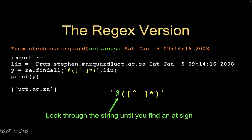We imported RE, and the variable holding the line of text is now called 'line.' We do re.findall() and say we want to begin matching after the at sign, then match anything that's not a space — using '[^ ]*' — and stop. So we don't start until after the at sign and we stop when we hit a space. The result is 'uct.ac.za' — the host domain. I prefer this regular expression approach.